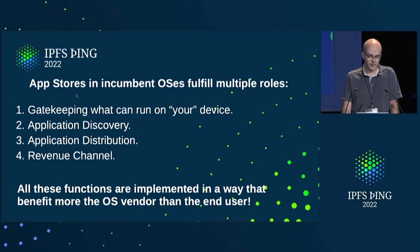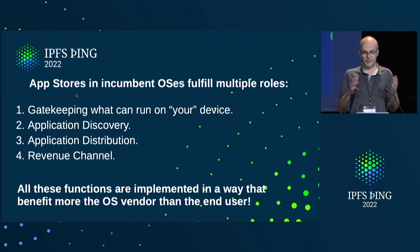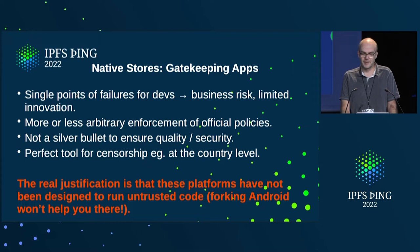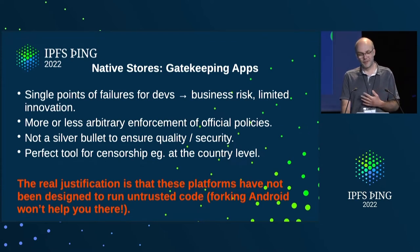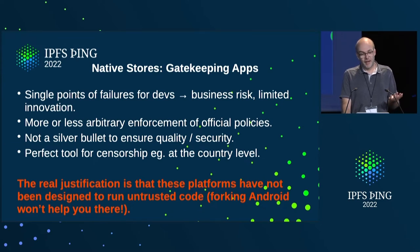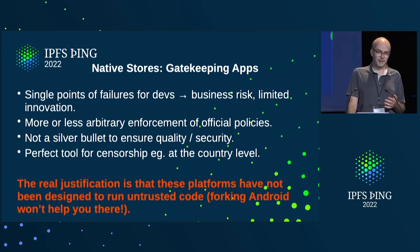I'll go through all these points one by one and see how it's done in native OSes and how that applies to the current web and what we can do with the decentralized web. Starting with native store gatekeeping — I'm always very surprised by how happy people are to write new apps for these OSes, while you know that it's very arbitrary how you can get accepted or rejected in these app stores. There are countless people that got updates rejected while the previous version was fine. So it's a big single point of failure and a high business risk, and also limiting innovation.